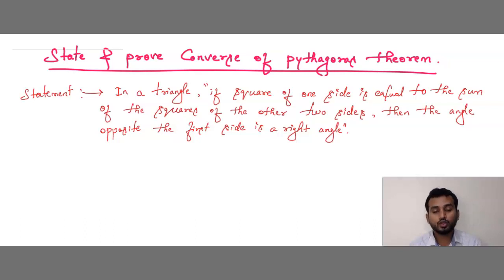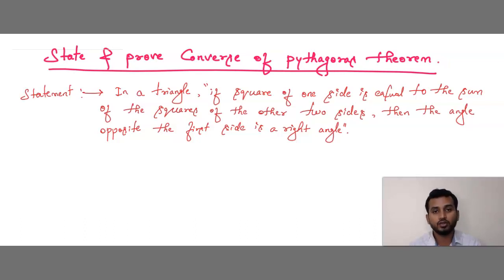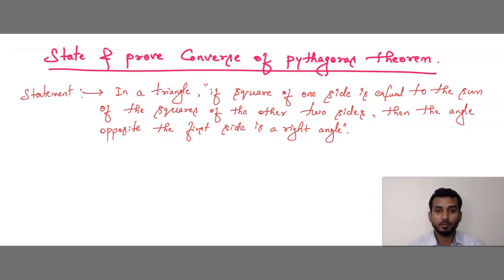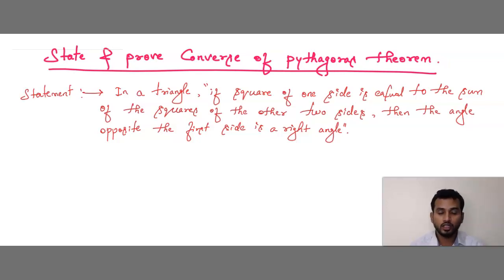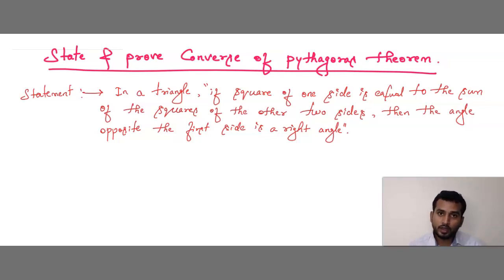Now the question can be asked in two forms. Either they can ask you to State and Prove the Converse of Pythagoras Theorem, or they may ask you only the Statement — meaning you have to write only the statement, not the proof. State and Prove means both. Prove that means only you have to prove the given statement.